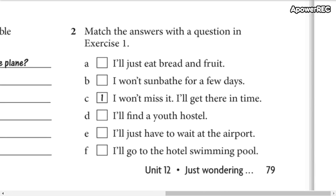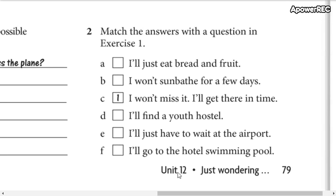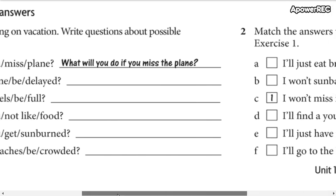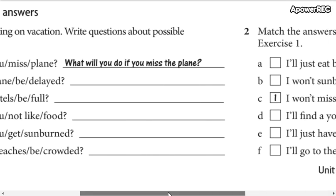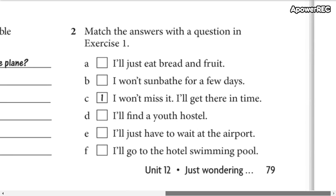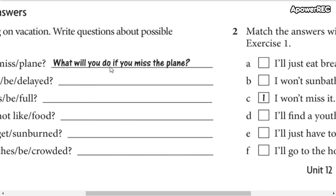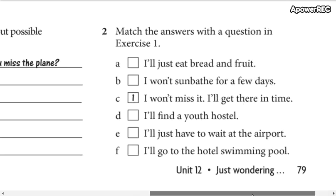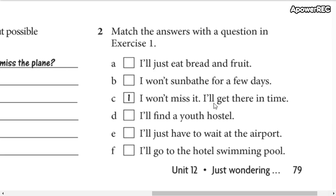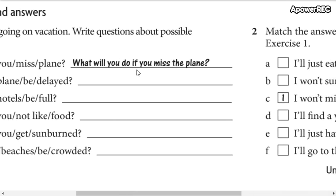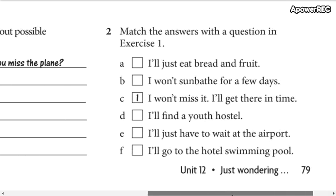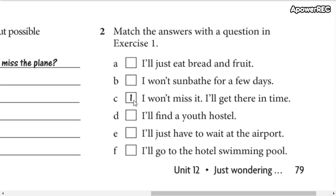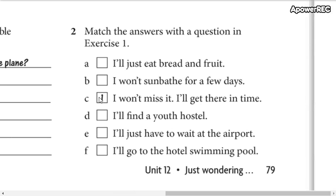In part number two we have answers. If you notice, you have your questions and in this part you have the answers. For example: 'What will you do if you miss the plane?' — 'I won't miss it, I'll get there in time.' So when you finish writing your questions, don't forget to match these questions to one of these answers. You have six questions and six answers, so write one number for each one.